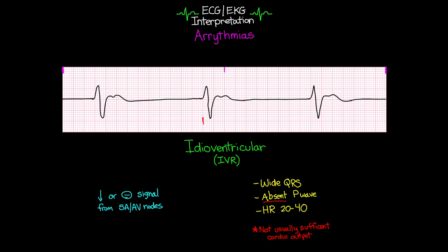Looking at our example here, you can see we've got that really wide QRS. You can see there's not any P wave anywhere around here. And counting this out, we've got a heart rate of 30. Therefore, we can definitely identify this as an idioventricular rhythm. Now, just like with our junctional rhythms, sometimes you're going to see faster heart rates than what's normally within that intrinsic ventricular rate, and we do have a couple other variations of this that we're going to talk about.